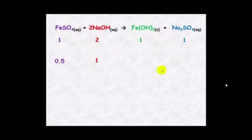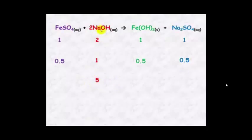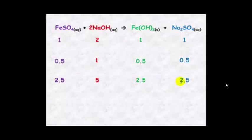The products are in a one to one to one ratio, so you'll have 0.5 mole and 0.5 mole. If we're told we have five moles of sodium hydroxide, we know it reacts with half the amount — 2.5 moles of iron sulfate — and that will also produce 2.5 moles of iron hydroxide and 2.5 moles of sodium sulfate. These ratios do not change.